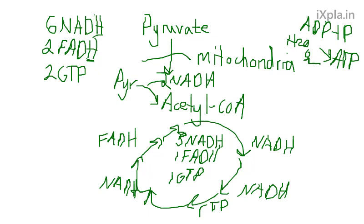These numbers are important: every NADH equals three ATP, every FADH equals two ATP, and every GTP equals one ATP — since GTP is essentially an ATP. The textbook might say 2.5 or 1.5, but that's getting into detailed biochemistry; just go by three and two. So for one Krebs cycle: three NADH equals nine ATP, one FADH equals two ATP, one GTP equals one ATP.